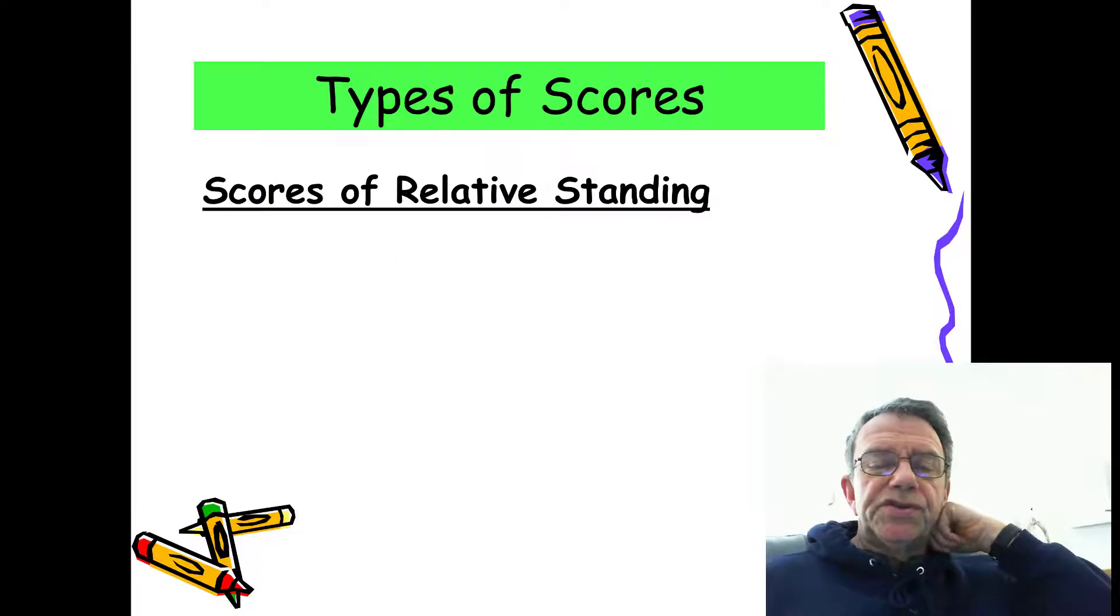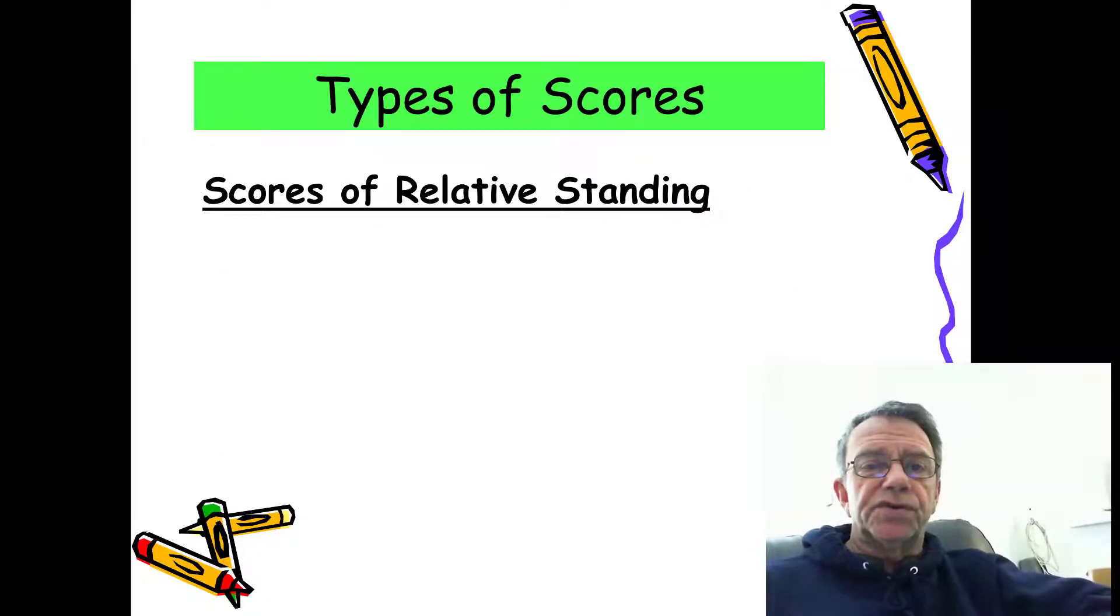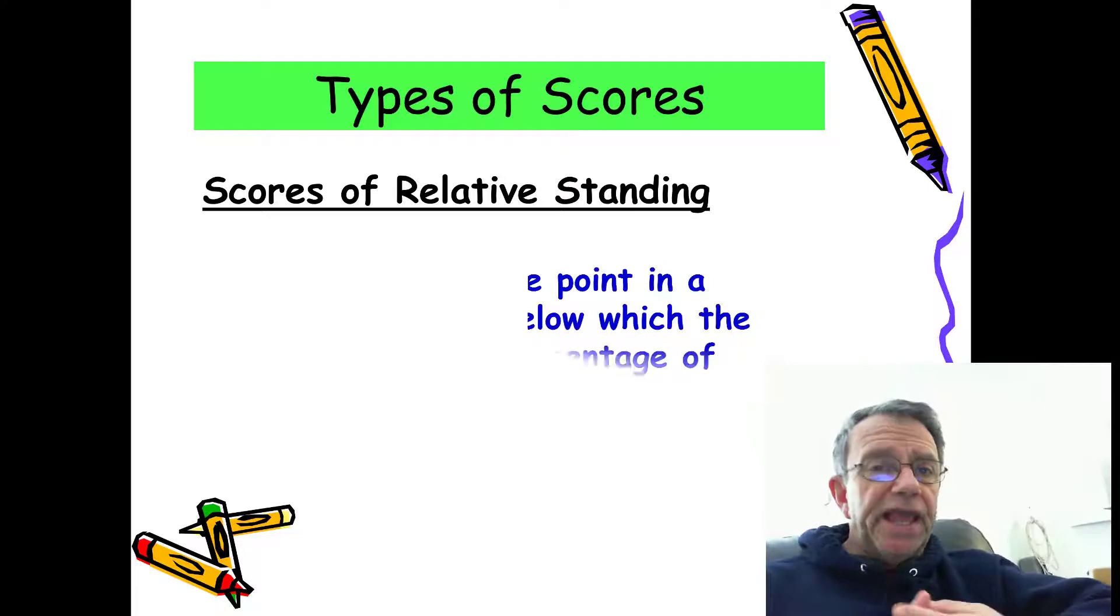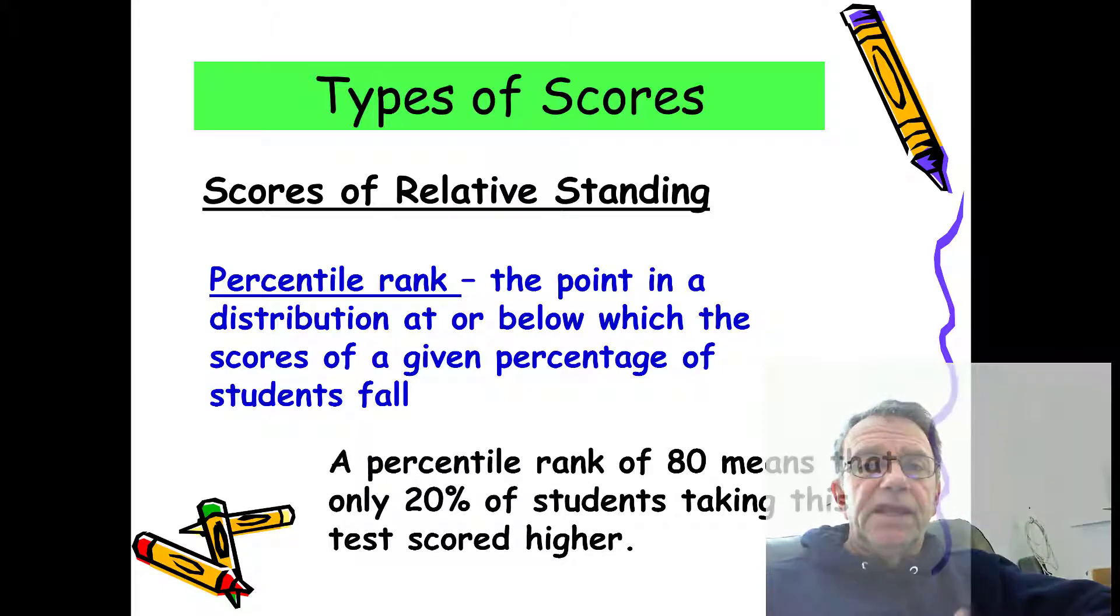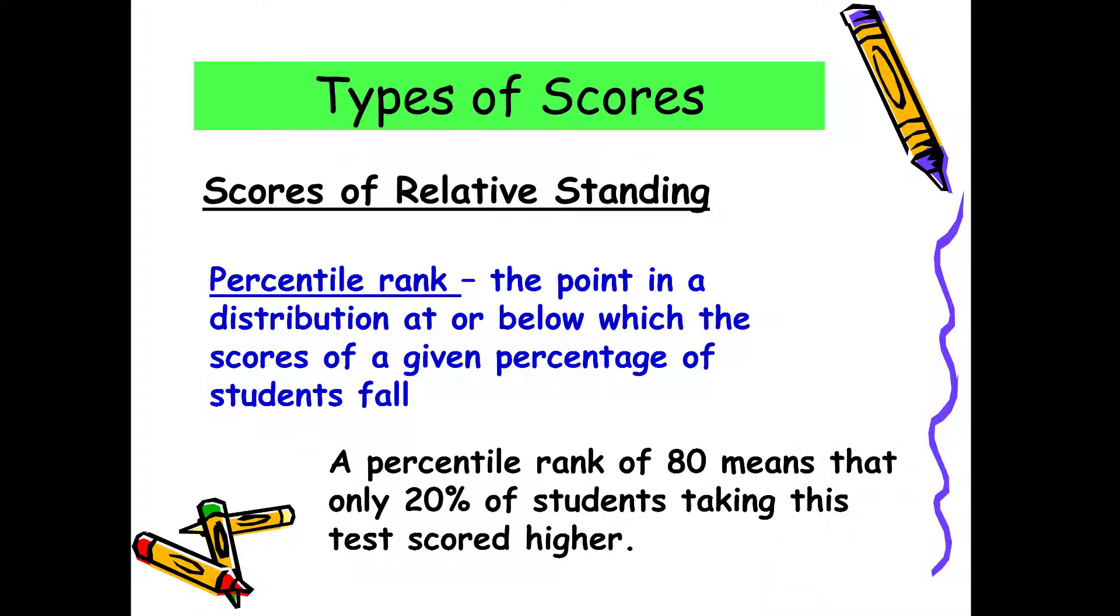I do want to mention two types of scores that are generated by a norm-referenced test: age equivalents and percentiles. Percentile indicates where you stand in relation to others who have taken the test. So if you score at 80%, that means you've done better than 80% of the students that have taken that test and that there's only 20% of students who took it that did better than you.